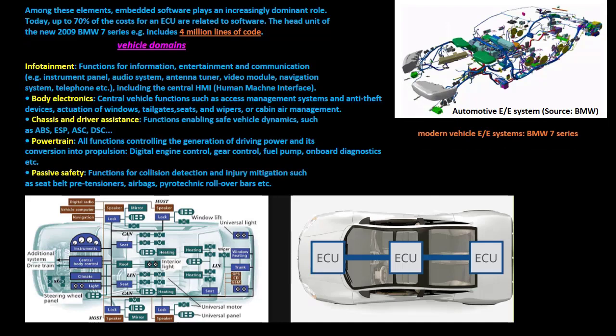Automotive EE systems are divided into clusters of related functions, so-called vehicle domains. The following list represents a domain structure that is widely used in the automotive industry.